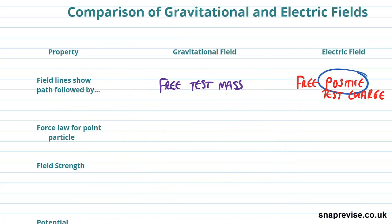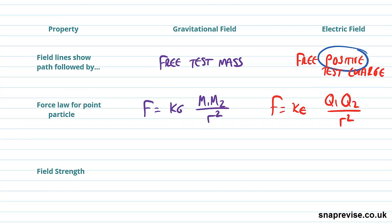So what's the force law for a point particle? We're not going to put in all of the constant stuff, what we care about is just the general structure of it. We see that the force law for a point particle is given by F equals some constant kg times m1 m2 over r squared, where m's are our masses. That's the force law for gravitational field.